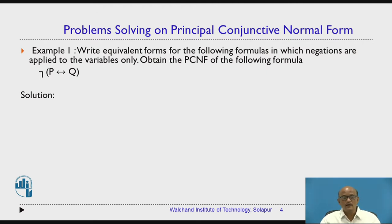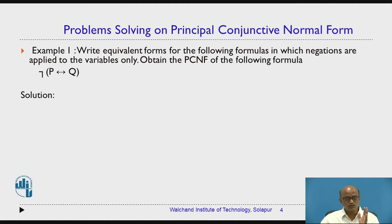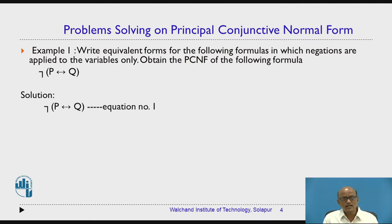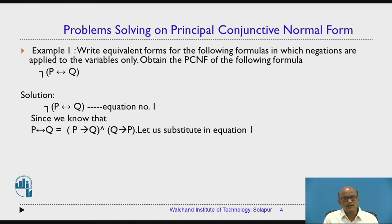As we know, in a PCNF or normal form we have only basic connectives: AND, OR, and negation. In this particular formula, biconditional is present, so we need to remove this biconditional by substituting an equivalent formula. Let us assume this is equation number 1. We know that P biconditional Q is equivalent to P conditional Q AND Q conditional P.